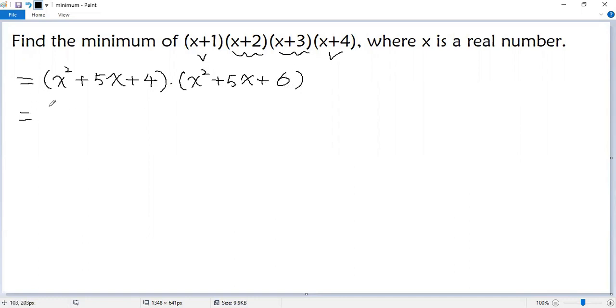Now we write the first factor as x squared plus 5x plus 5 minus 1. The second, x squared plus 5x plus 5 plus 1.